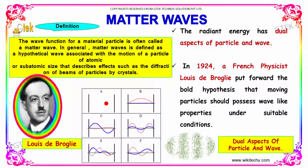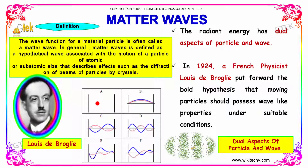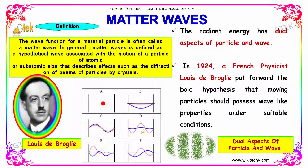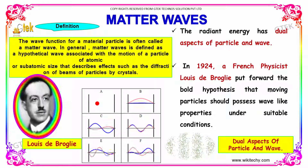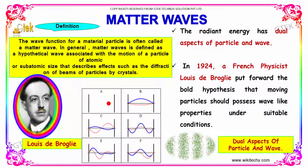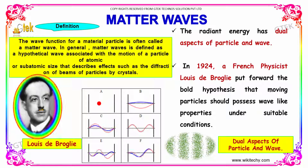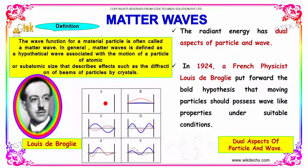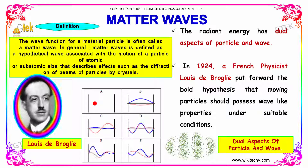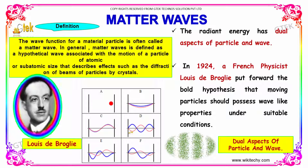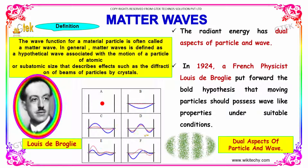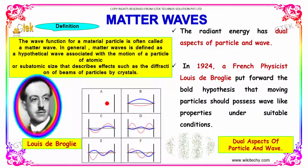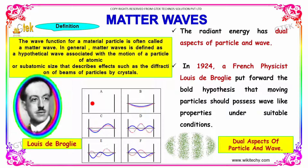The radiant energy has dual aspects of particle and waves. You are able to see the particles here and waves here. In 1924, a French physicist Louis de Broglie put forward the bold hypothesis that a moving particle should possess wave-like properties under suitable conditions.